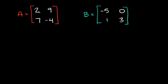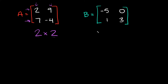So here we have a two by two, because we have two rows and two columns. You always list the rows first and the columns second. So we have a two by two here, and same thing here, we have a two by two.